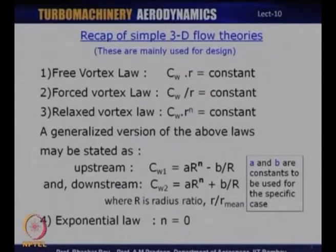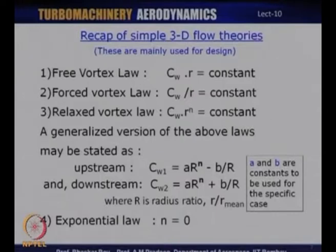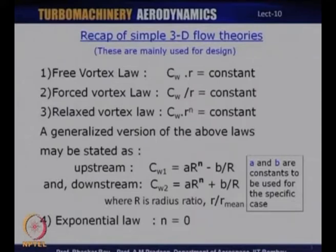The first is the free vortex law, derived from the simple radial equilibrium equation, which reads as C_w × r = constant. The corresponding opposite is the forced vortex law — also referred to as the solid body law — where the flow behaves like a solid body, given as C_w / r = constant. The relaxed or generalized free vortex law is stated as C_w × r^n = constant, where n is a parameter that can vary from −1 (forced vortex) to +1 (free vortex) and any value in between.